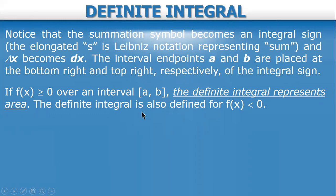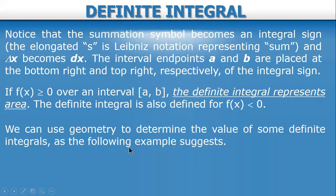Notice that the summation symbol becomes an integral sign — the elongated S in Leibniz notation representing sum — and delta x becomes dx. The interval endpoints a and b are placed at the bottom and top of the integral sign respectively. If f(x) is greater than or equal to 0 over interval [a,b], the definite integral represents area. In some cases we can use geometry to determine the value of definite integrals if the graph is a simple geometric shape.